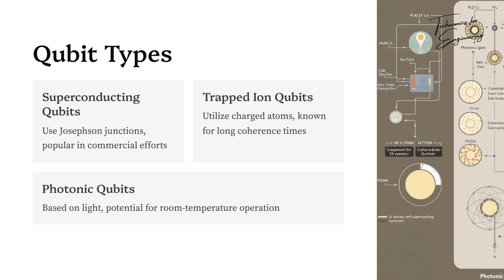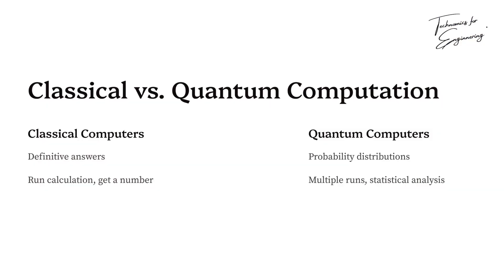Superconducting qubits are easier to manufacture, but suffer from shorter coherence times. Ion traps offer longer coherence, but are tricky to scale. Photons are great for communication, but harder for computation. The race is on to find a scalable solution.